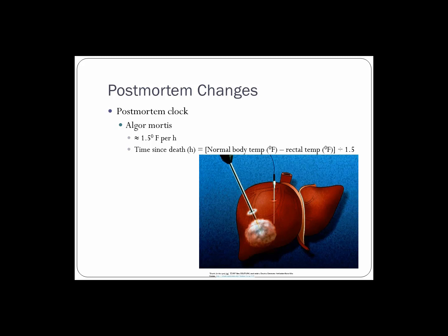The body cools at a rate of about one and a half degrees Fahrenheit per hour. This is a very accurate method of aging a dead body — animal or human — if it is found within the first 24 hours after death. Body temperature is affected by numerous variables: if the ambient temperature is warmer than normal body temperature, if the body is wrapped in blankets or clothing or has a lot of fur, or if the body had a fever before death. But the general rule of one and a half degrees Fahrenheit per hour holds pretty true within the first 24 hours.